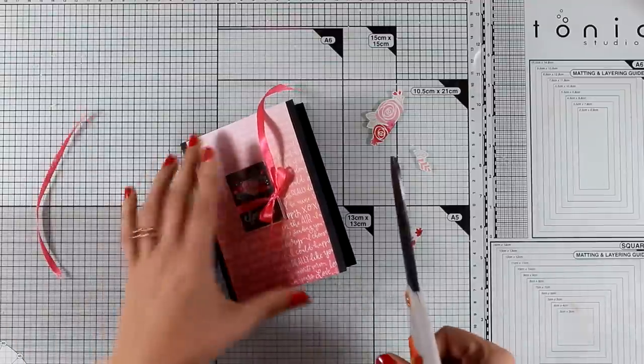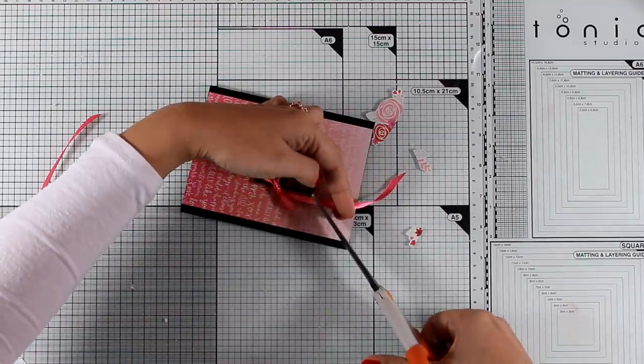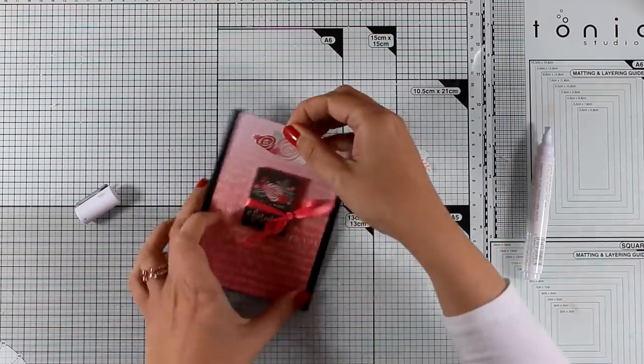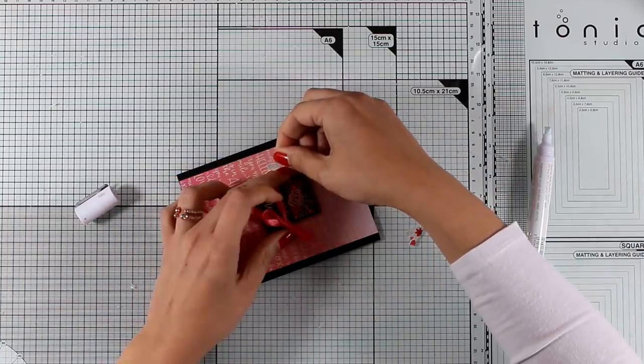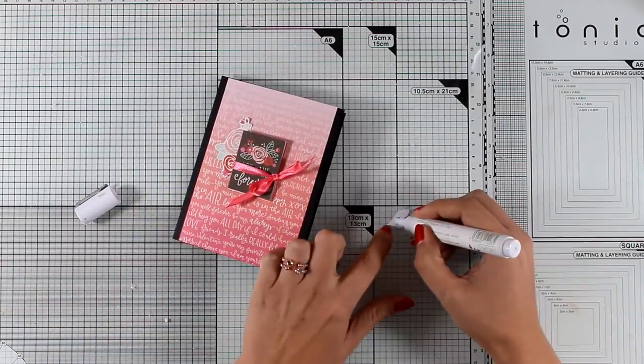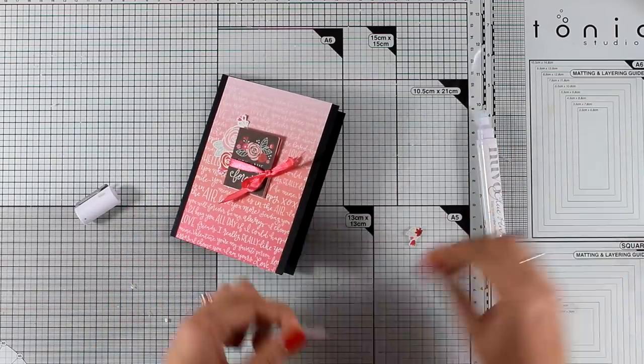Now I am using my scissors to trim off the excess ribbon, and then I will go ahead and start embellishing this booklet by using all those cutouts that I did while fuzzy cutting. So I am just using my glue pen here, and I am tucking under the booklet all those little cutouts.